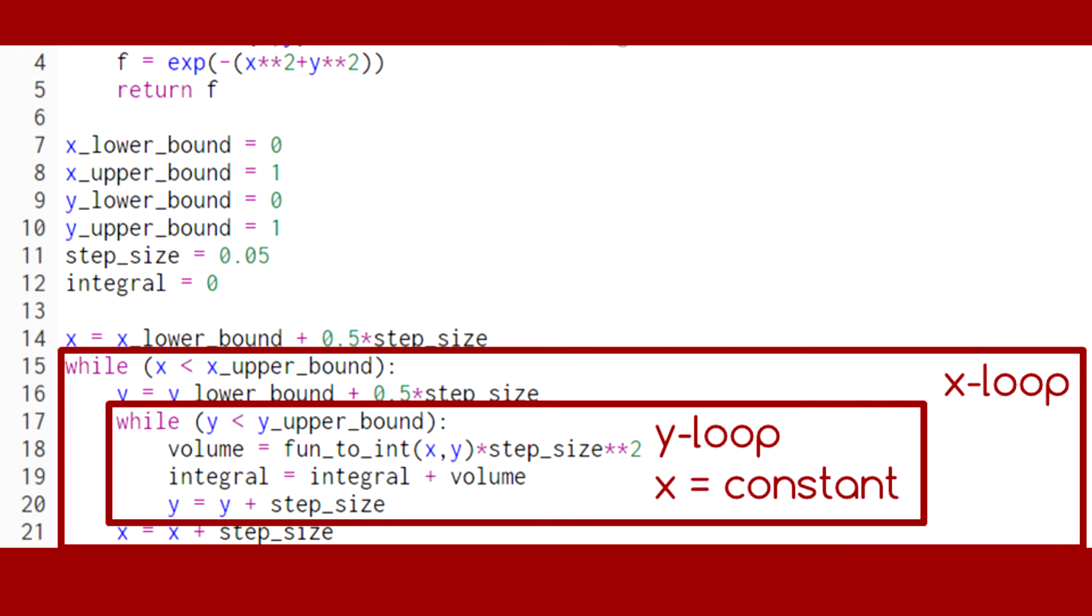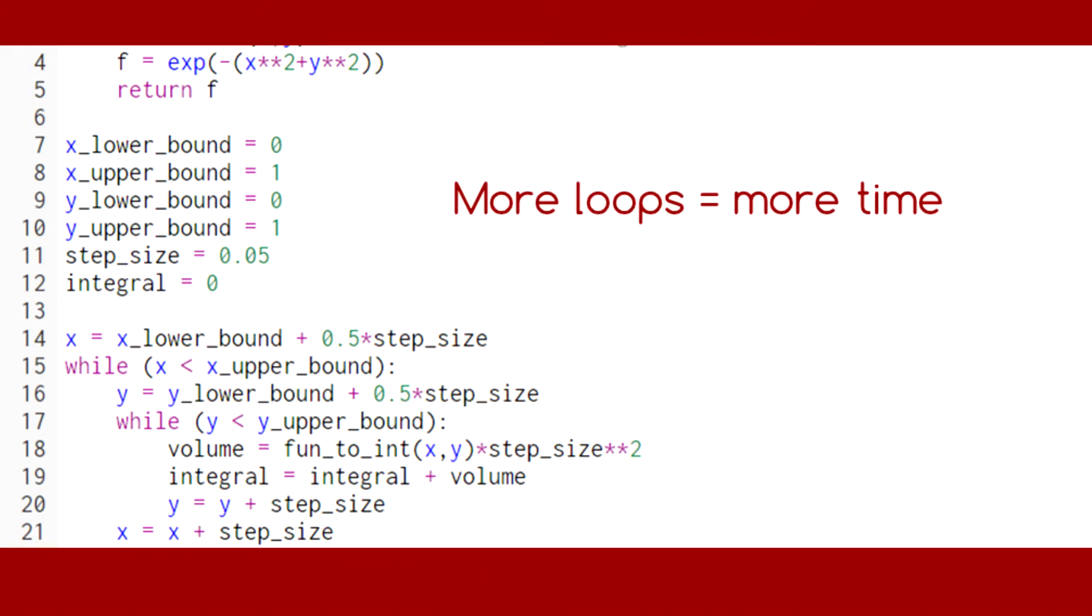This means that we keep x constant until we've completed looping over all the y values. Then we increment x by one step and restart the loop over the y values. This means that integration over two variables takes much longer than integration over one variable.